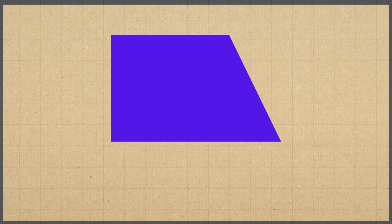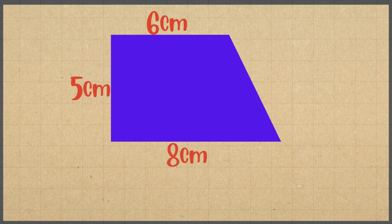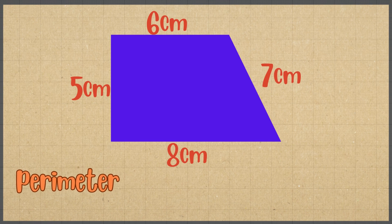Another one. An irregular quadrilateral is a four-sided shape with different side lengths. In this example, the first side measures six centimeters, the second side measures eight centimeters, the third side measures five centimeters, and the fourth side measures seven centimeters. To find the perimeter, we add all four side lengths together.